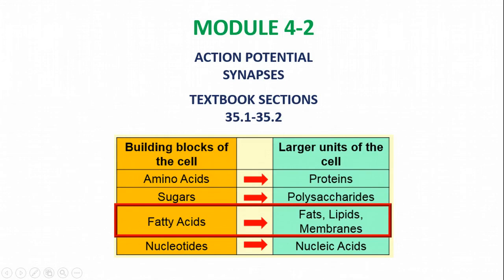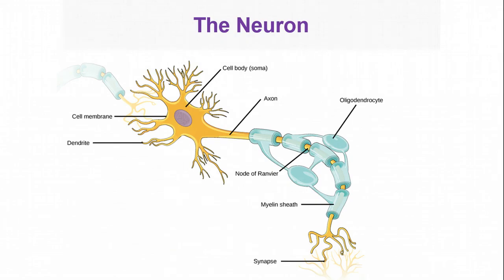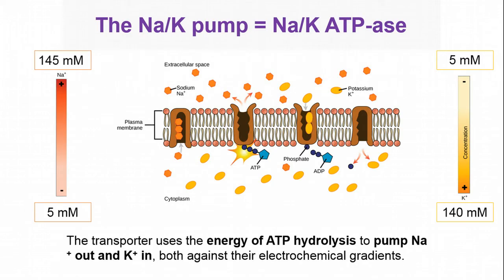Welcome to Module 4-2. Today we're covering action potentials and synapses. This is in your textbook in Chapter 35.1 and 35.2. The main focus of this lecture is how a neuron takes an electrical signal from one end of the neuron down the axon and all the way to a synapse. Before we start talking about how an electrical impulse travels down a nerve axon, we have to first set up the scenario.